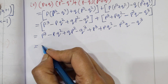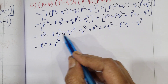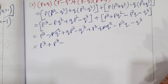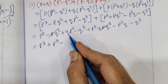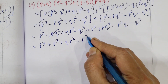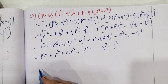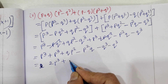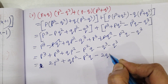अब like terms को इकट्ठा करेंगे। P³ plus P³ है। Minus PQ² और plus PQ² दोनों के opposite signs हैं और same term है, तो इन्हें cancel कर देंगे। Plus QP² plus QP² minus P²Q minus Q³ minus Q³ equal to 2P³ plus QP² minus P²Q minus 2Q³.